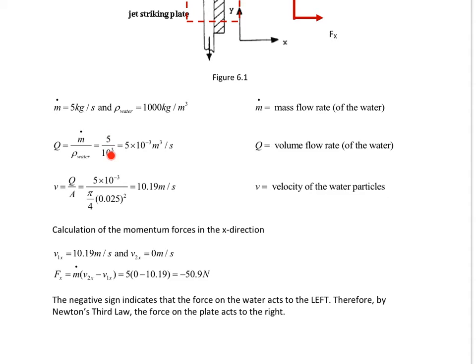This gives us 5 times 10 to the power of minus 3 cubic meters per second or 5 liters per second, but I would advise you not to use liters per second because you will get confused about the calculations. Remember, we have to work in terms of the SI units. Now, we evaluate the velocity, which is the volume flow rate divided by the area. And this gives us 10.19 meters per second.